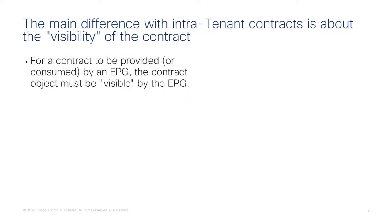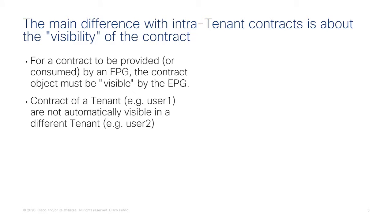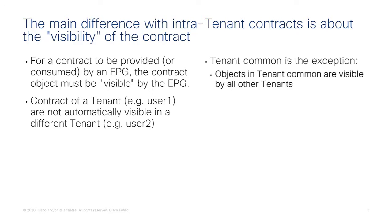The main difference with intra-tenant contracts is about which EPG can see the contract, because for a contract to be provided or consumed by an EPG, that contract object must be visible by the EPG. If you configure contracts in the same tenant that's always the case, but if you configure a contract between different tenants, an object of tenant 1 is not automatically visible in tenant 2. The only exception is tenant common, because all objects of tenant common are visible and usable by other tenants.